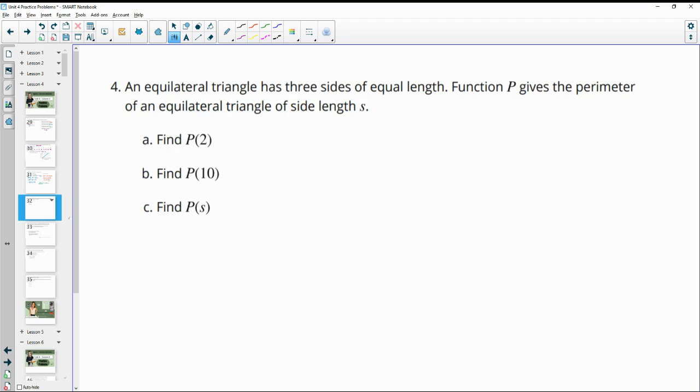Number 4, an equilateral triangle has three sides of equal length. So an equilateral triangle looks like this. And the function P gives the perimeter, which again is just adding the sides together, of the equilateral triangle of side length s. Find P of 2. So this means that each of these sides would be 2. So the perimeter, so P of 2 would be 2 plus 2 plus 2, which would give us 6.